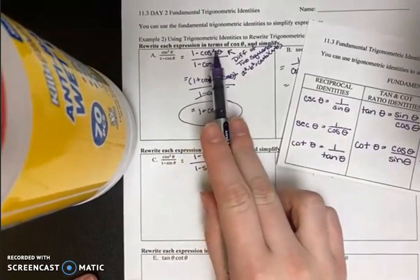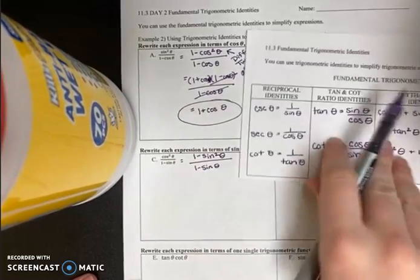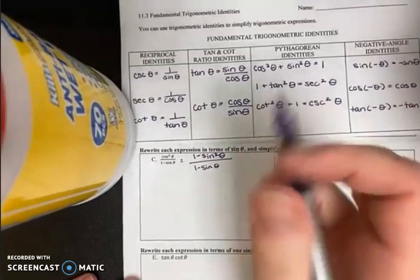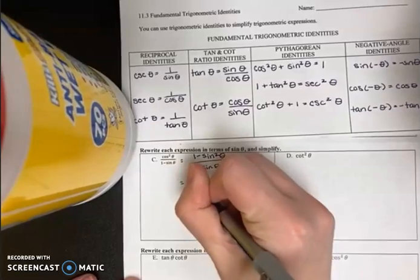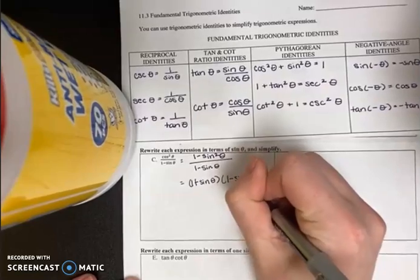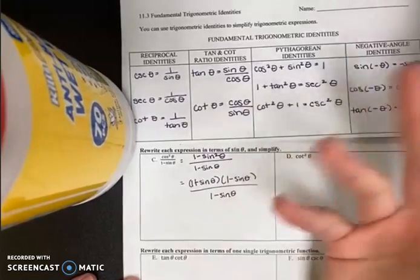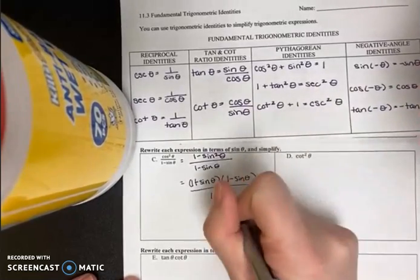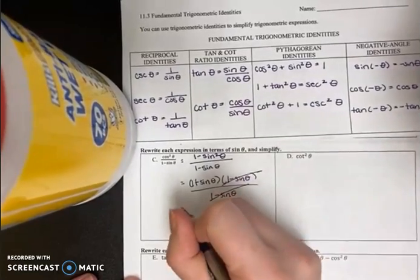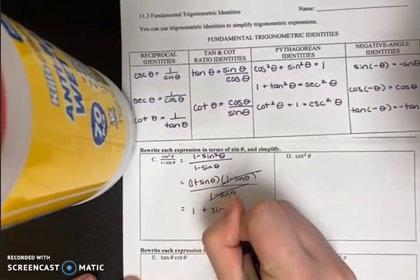This is very similar to what we saw in part A. Whenever we have one minus a trig function squared, that's a difference of two squares — because one is a perfect square of one, and sine squared is a perfect square of sine. So this becomes one plus sine theta times one minus sine theta, all over one minus sine theta. By factoring using the difference of two squares, the denominator cancels, and I'm left with one plus sine theta.